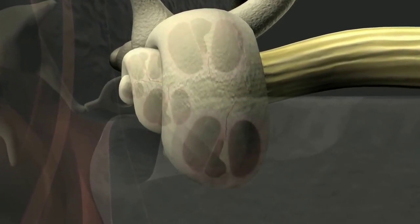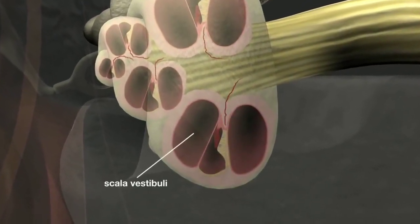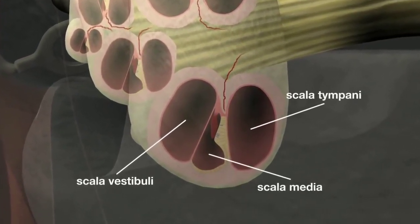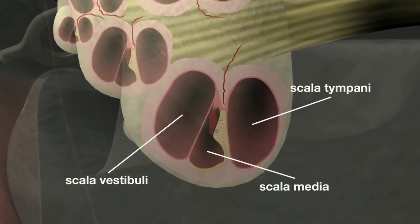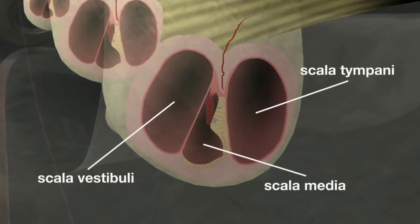It is split into three distinct sections known as the scala vestibulae, scala media, and scala tympani. The scala vestibulae and the scala tympani contain perilymph fluid. The scala media contains endolymph fluid.